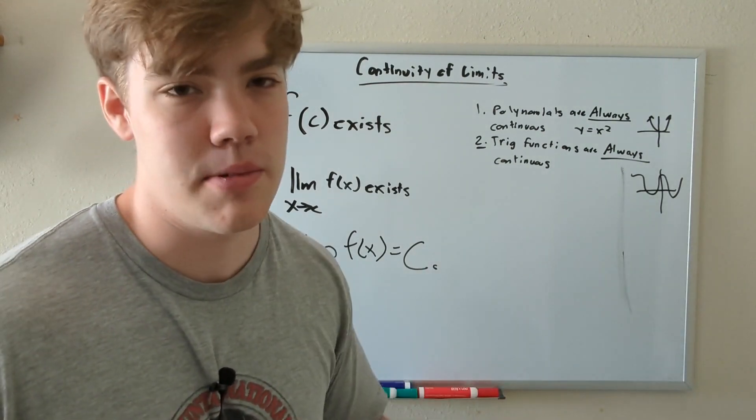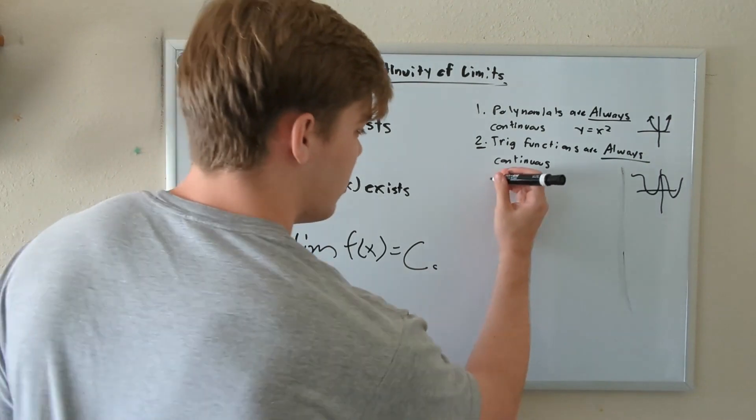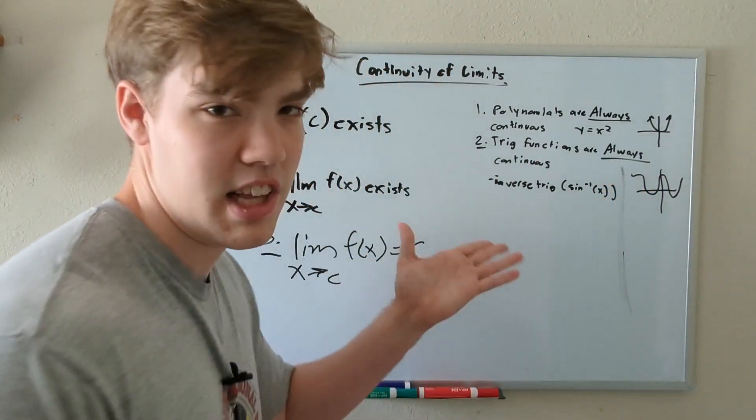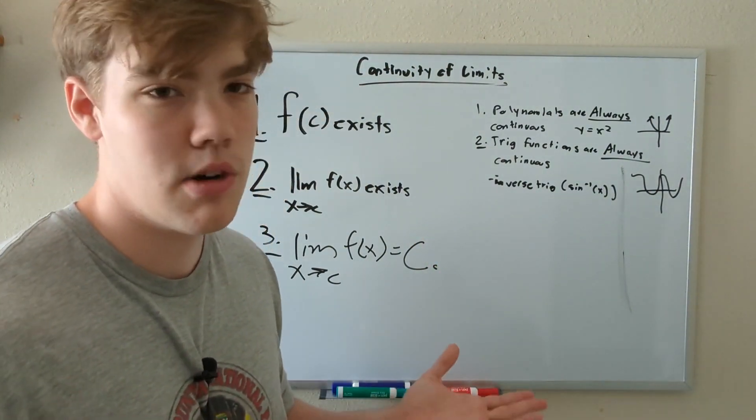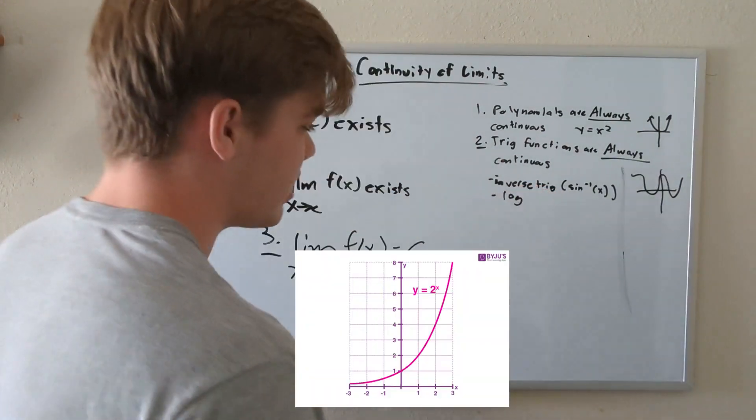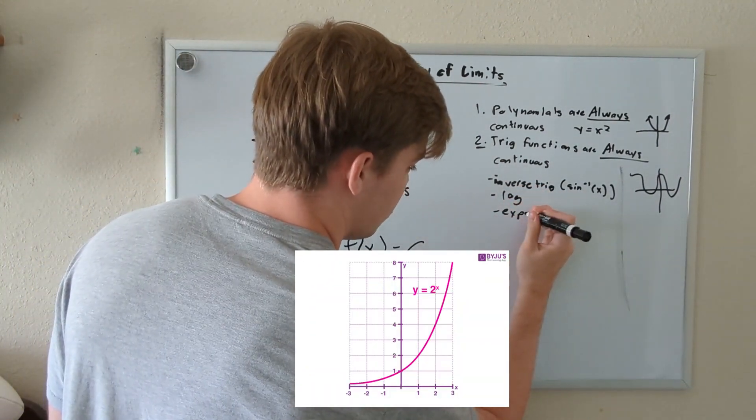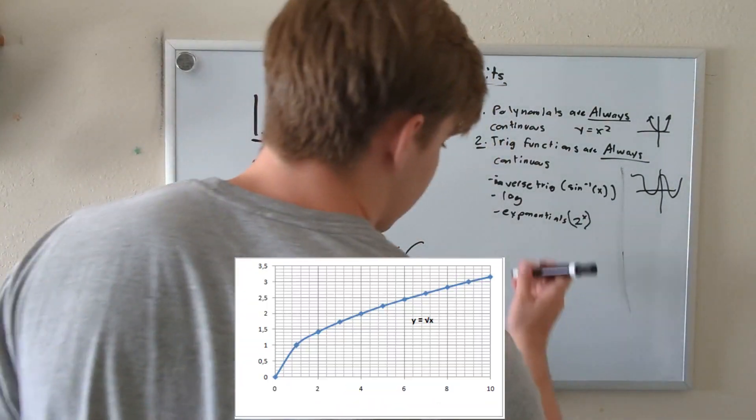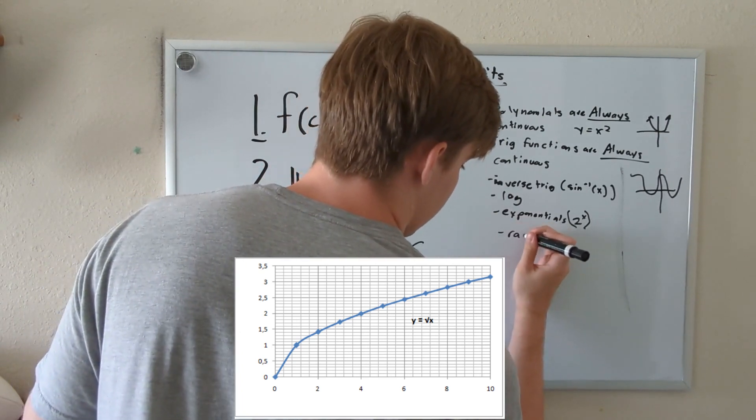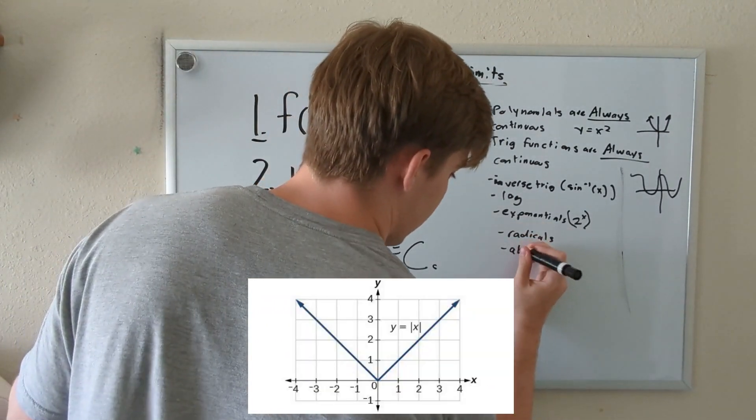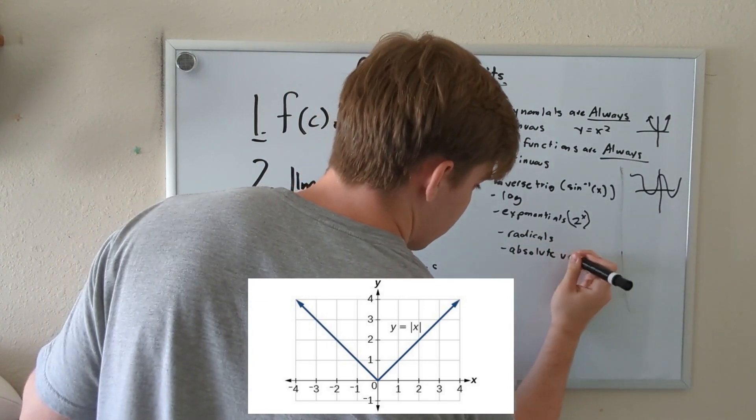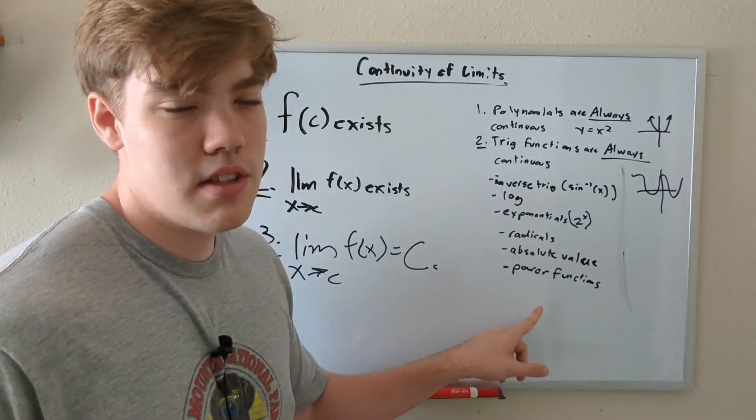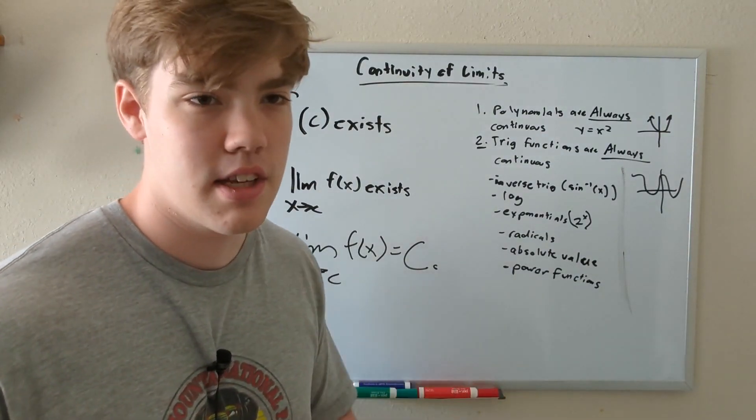Everything that I'm listing on this right side of the whiteboard are things that are always continuous. So real quick, I'm going to write down every other type of function that is always continuous. For example, inverse trig, which is sine of negative one. This is also always continuous. That could be true for cosine, tangent, so on and so forth. Log functions are also always continuous. Exponential functions are also always continuous. Exponential, let's just say two to the X. That is always continuous along the entire graph. Radicals are always continuous. Absolute value functions are always continuous. These are also always continuous. Power functions are also always continuous. And these are all the functions that are literally always continuous no matter where you look on the graph.